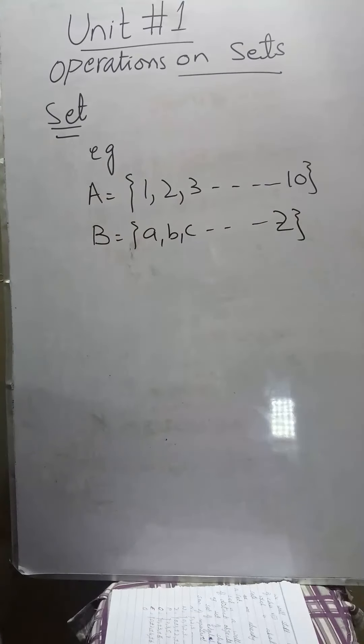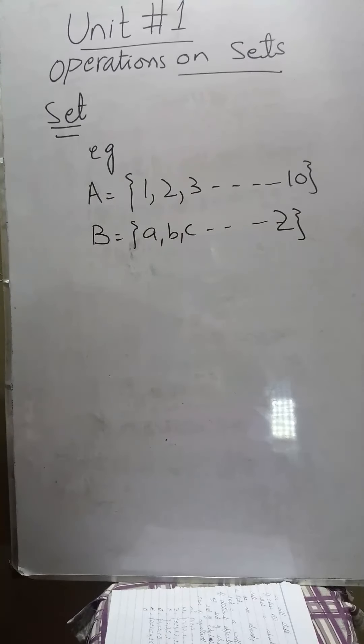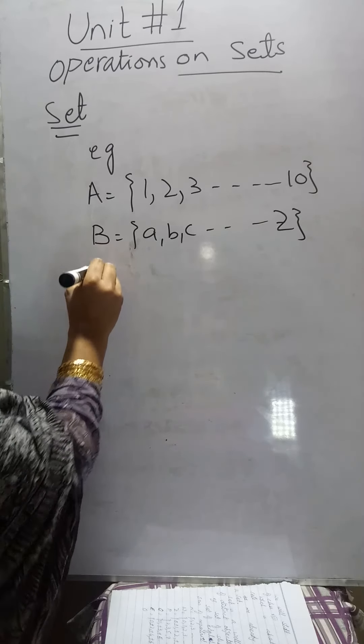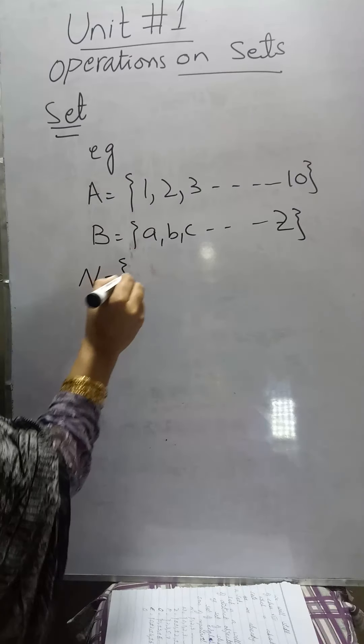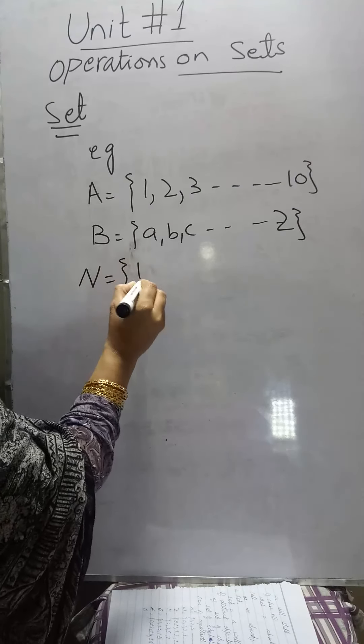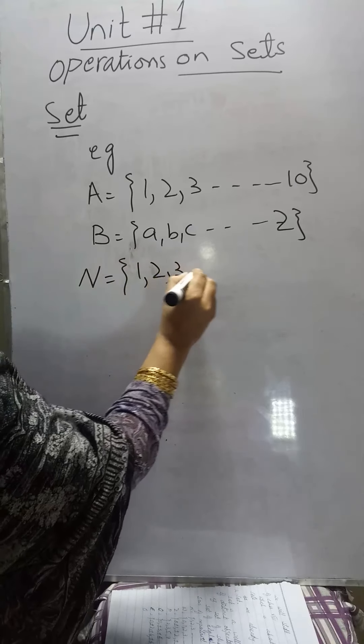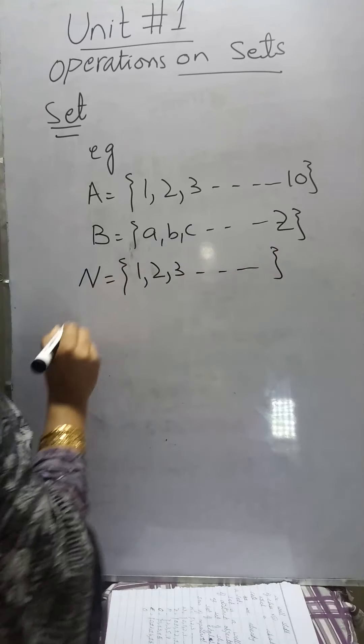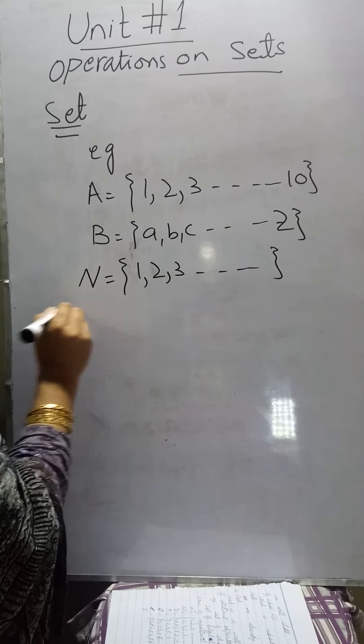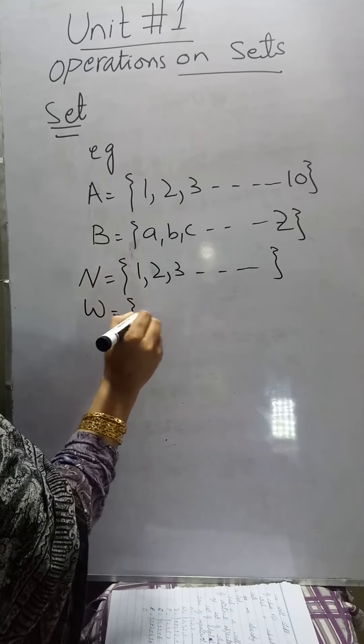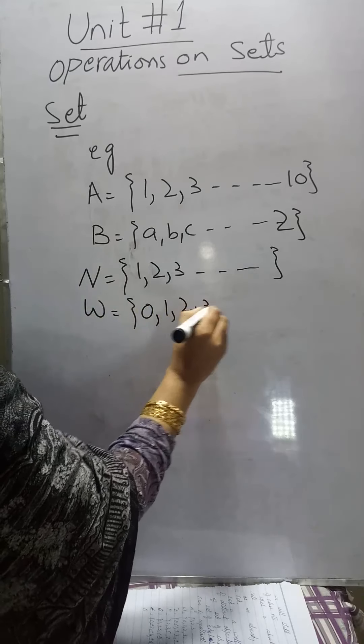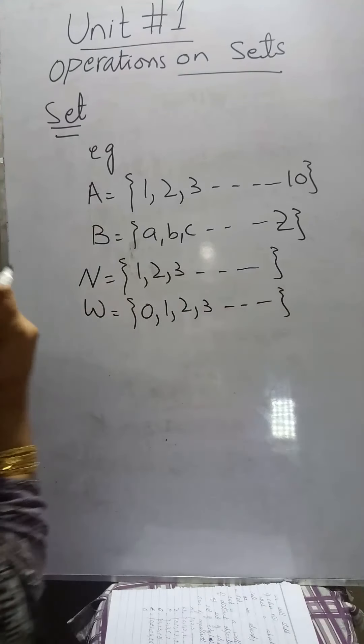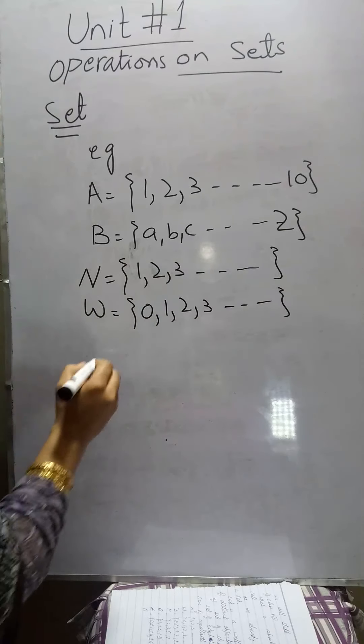Now I will tell you about some important sets which are: the set of natural numbers represented by the letter N, it is started with the number 1, 2, 3 and so on. The set of whole numbers which starts with 0, 1, 2, 3 and so on. These all sets are infinite.